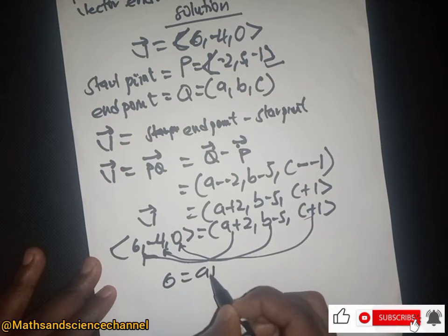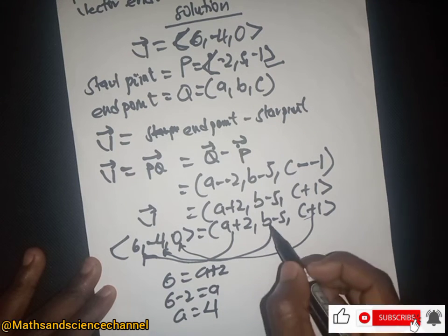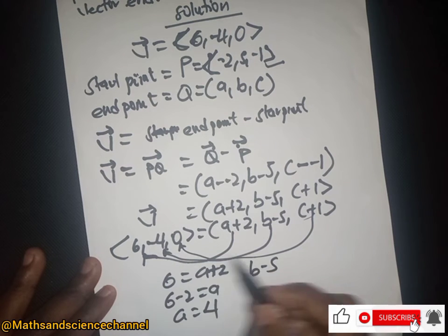Therefore in this case we have 6 - 2 equal to a, and a here will be equal to 4. Then also we have b - 5 here being equal to -4.